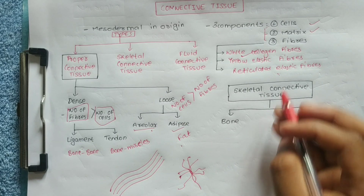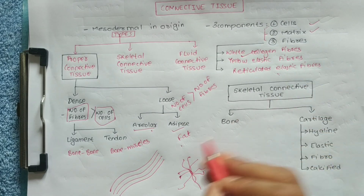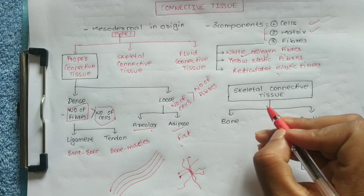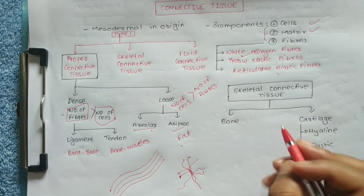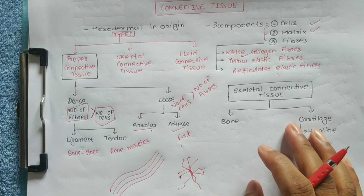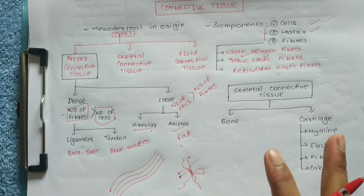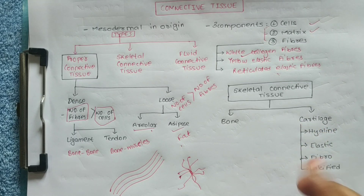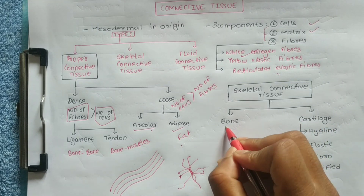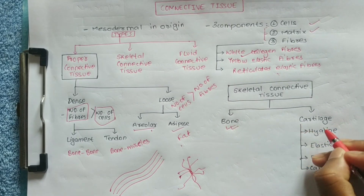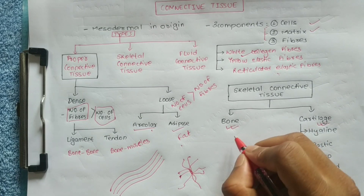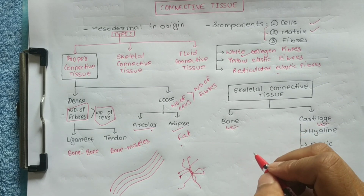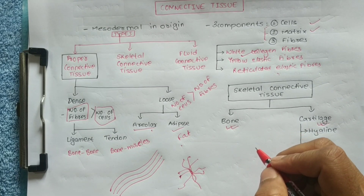The other type is skeletal connective tissue. In skeletal connective tissue, there are two types: bone and cartilage. Now we are going to talk about cartilage.